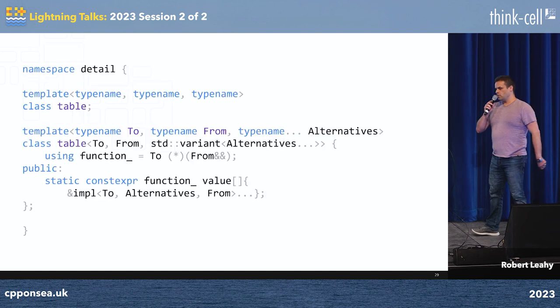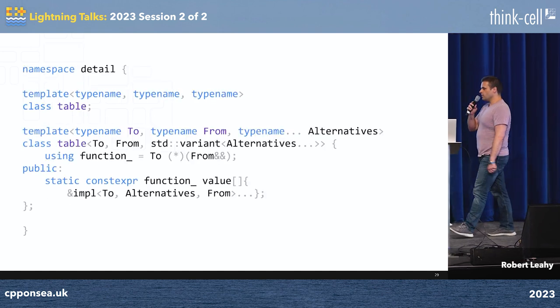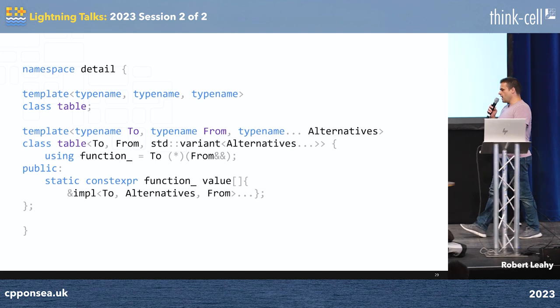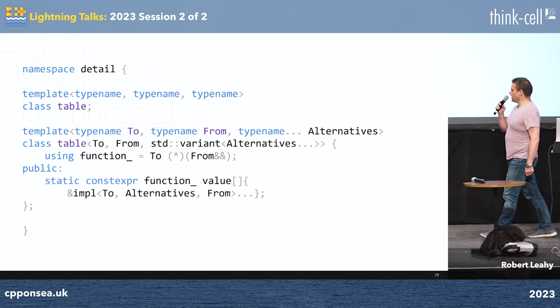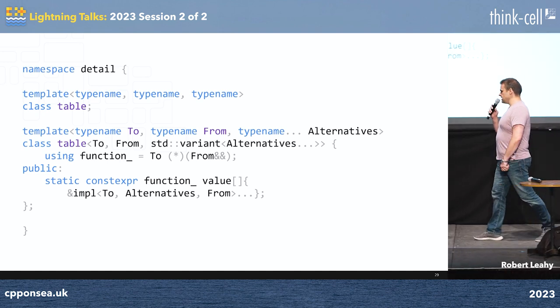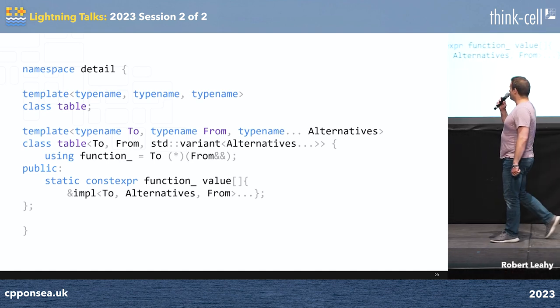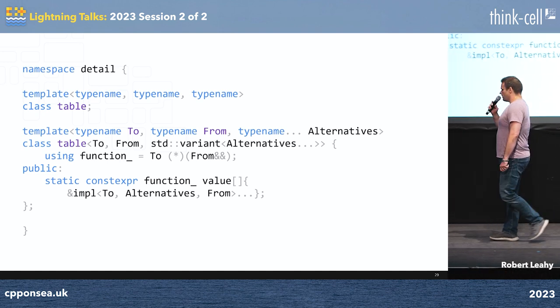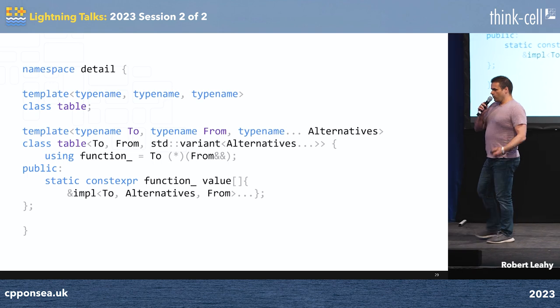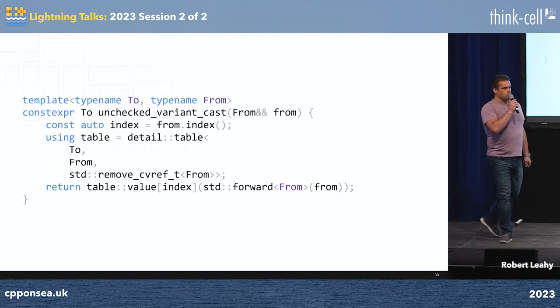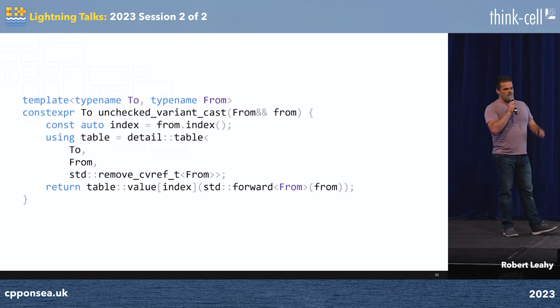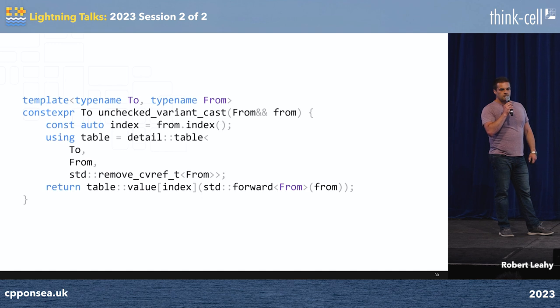I should probably air-quote 'impossible', as we all learn when we run with UBSan. Then we need to go and make a lookup table, which we'll do with some fancy pack expansion and another detail class. And then we go ahead and use it, and now our code builds and does exactly what we want.